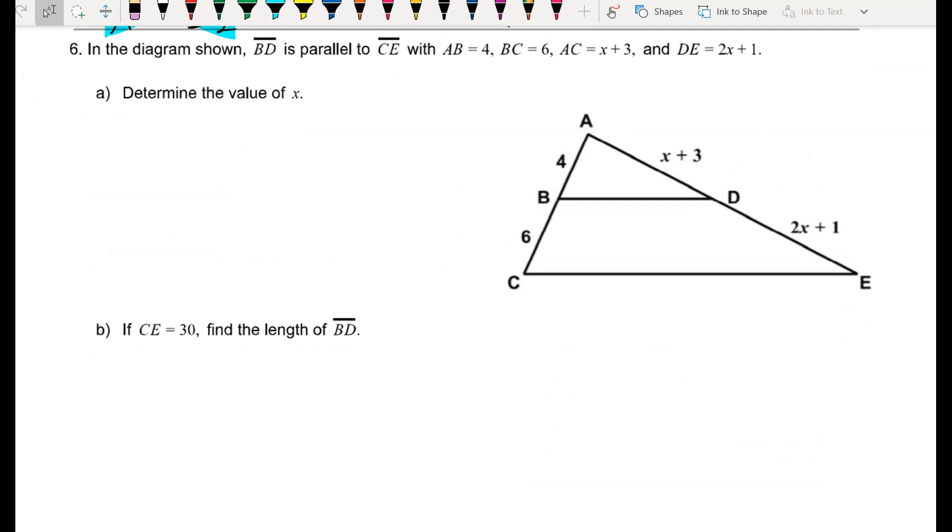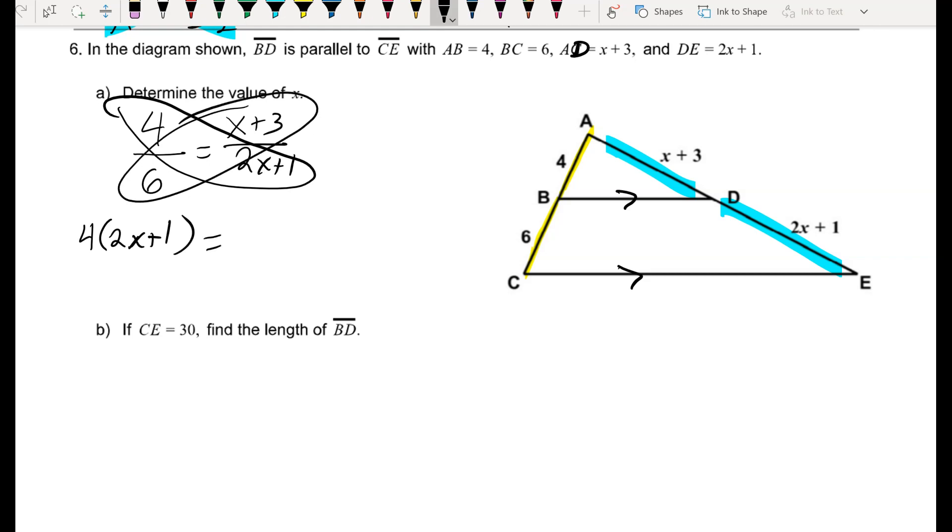Number 6. In the diagram shown, BD is parallel to CE, with AB equal to 4, BC equal to 6, AD equal to x plus 3, and DE equal to 2x plus 1. Well, there's lots of things you could do here. You could set up a similar triangles proportion, where you do small over big equals small over big. But I noticed that because BD and CE are parallel, I could use the side splitter theorem, which just says part over part equals part over part. So I'm going to take 4 over 6, set it equal to x plus 3 over 2x plus 1. Be very careful with your cross multiplication here. If you're multiplying 4 times 2x plus 1, you're going to have to distribute it there. And along my other diagonal, that's 6 times x plus 3. 4 times 2x is 8x. 4 times 1 is just 4. 6 times x is 6x. And 6 times 3 is 18.